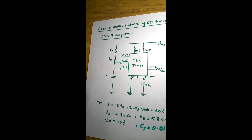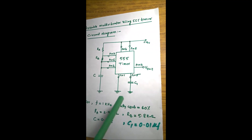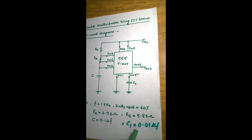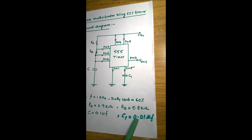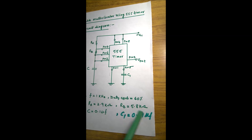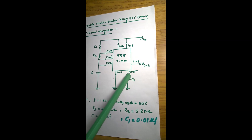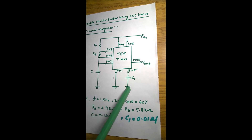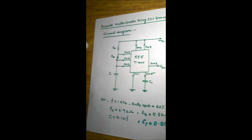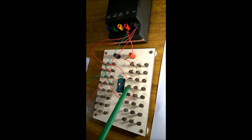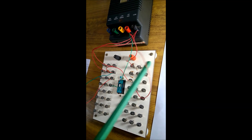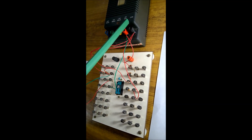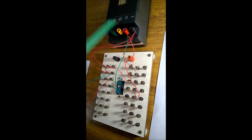Next, pin number 5 is connected to capacitor C1, whose capacitance value is 0.01 microfarad. One terminal is connected to pin 5 and the other plate is connected to ground. You can see the red wire going to the common ground.